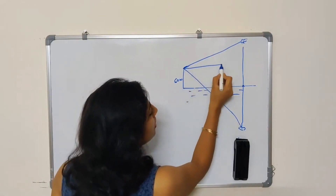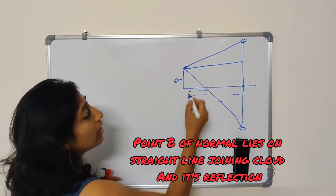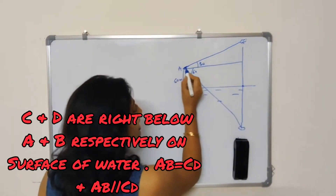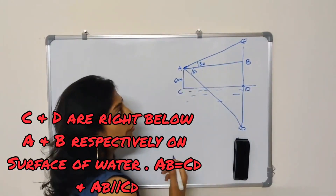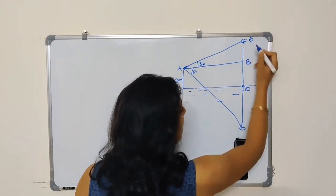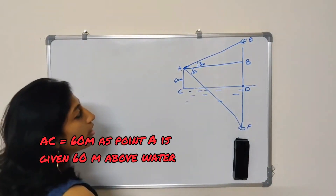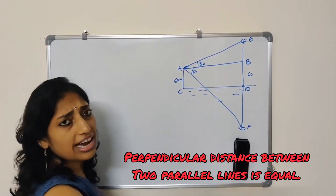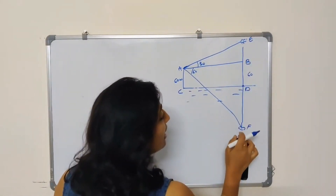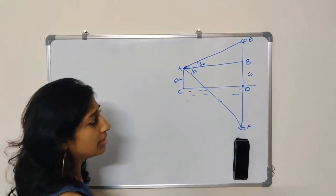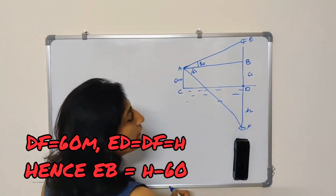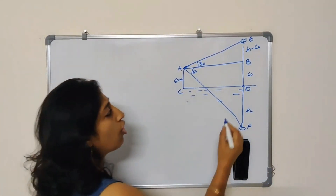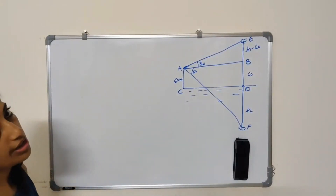Now let me consider a normal. We know that this angle of elevation and depression is measured from the normal, and obviously this distance lies on the surface of water. Let the cloud be called E and its reflection be called S. Now if AC is 60 and BB is 60, actually ABCD is kind of a rectangle. Since ED and DF have to be the same, if I consider DF as H, then EB will be H minus 60. I have got the figure.